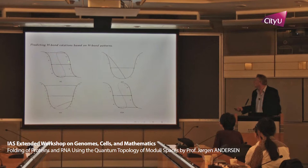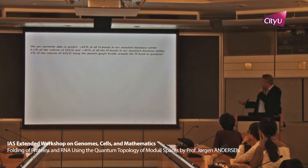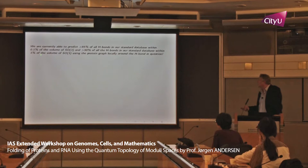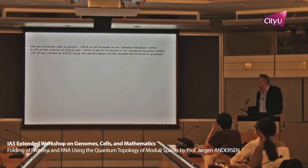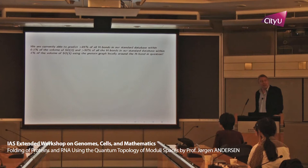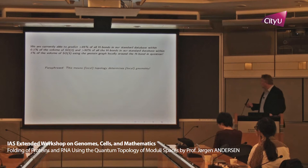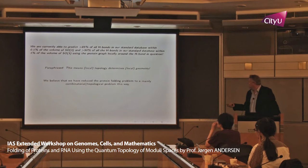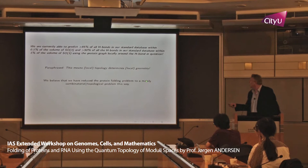We analyzed whether the local structure of the graph determines the geometry of the hydrogen bonds. Taking a small snippet of the graph and assuming it is known, can we determine the rotation at the central H-bond from the local pattern? Indeed — statistically, 85% of all hydrogen bonds can be predicted within 0.1% of the volume of SO(3), and 90% can be predicted within 1% of the volume. So local topology determines local geometry. We believe we have reduced the protein folding problem to a mainly combinatorial and topological problem — very similar to what we dealt with for RNA.